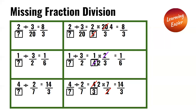1 over something divided by 3 over 2 is equal to 1 over 6. Applying KCF: 1 over something times 2 over 3, which equals 1 over 6. The missing number has to be 4, because 2 times 2 is 4.